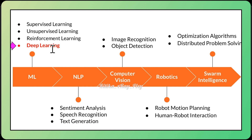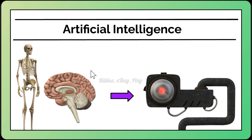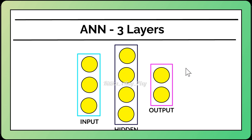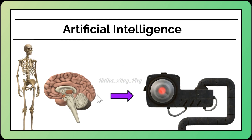Deep learning is a subset of machine learning in artificial intelligence that mimics the working of the human brain in data processing, creating patterns for use in decision making. This process involves the use of neural networks with many deep layers — artificial neural networks with many deep layers that can learn and make intelligent decisions on their own.